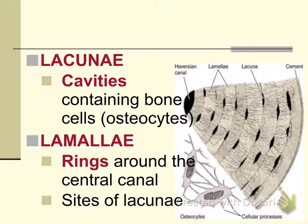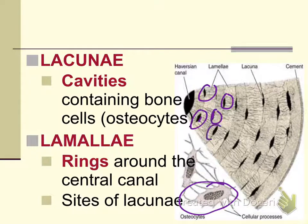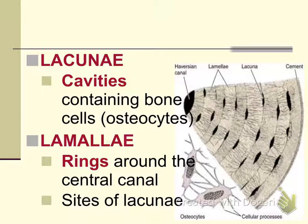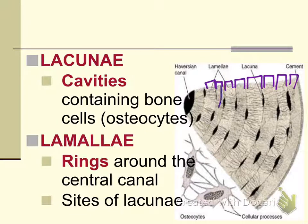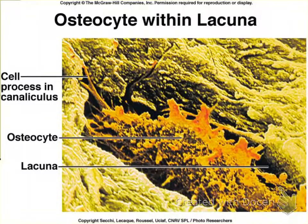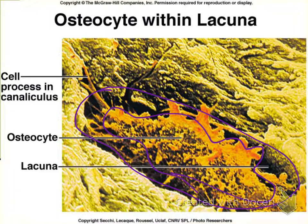Lacunae are the spaces that the osteocyte, or bone cell, sits in. Lamellae are the rings — the layers — and if you think of them like an onion, the lamellae are like the individual peels of the onion. The osteocyte sits within the lamellae. In a picture, the black space is your lacunae and the structure sitting inside it is the osteocyte; often they appear as one large dark area in the osteon.